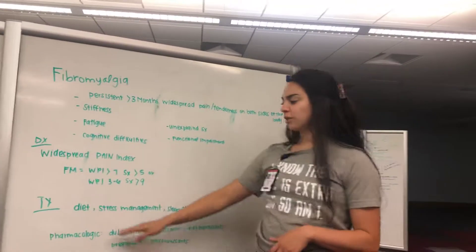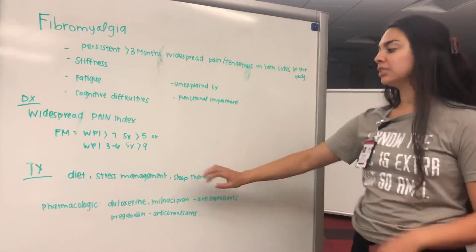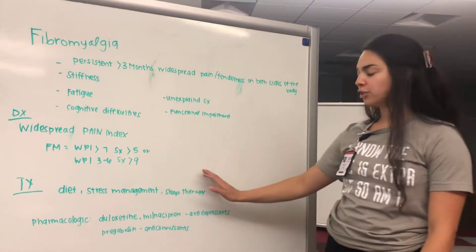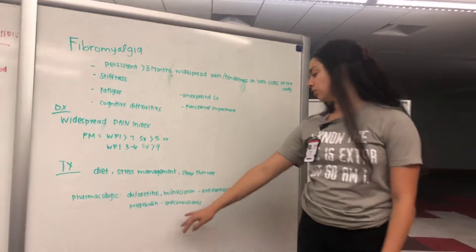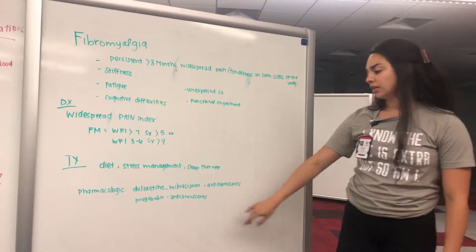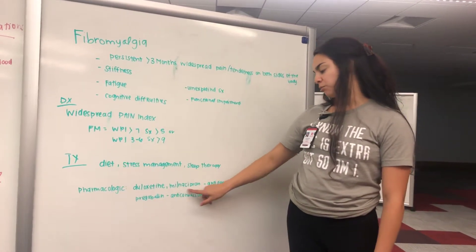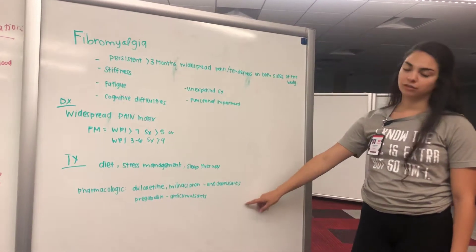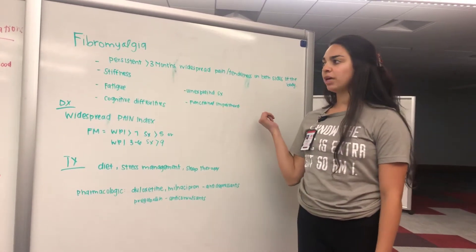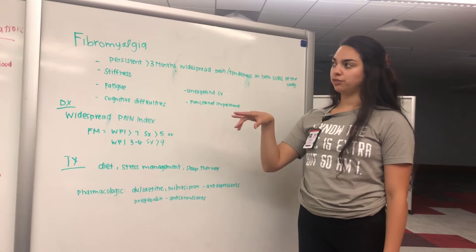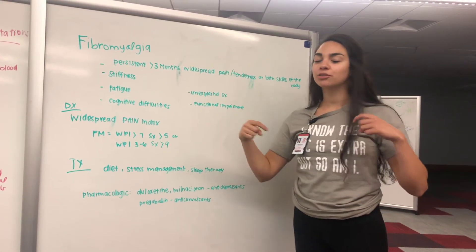As far as treatment, there's non-pharmacological and pharmacological options. Non-pharm focuses on diet, stress management, and sleep therapy. Pharmacologically, you can use antidepressants — duloxetine and milnacipran — and the anticonvulsant pregabalin. So that's fibromyalgia. We also went over vasculitis today, so thanks for tuning in — don't forget to like and subscribe.